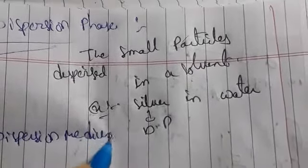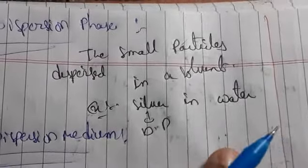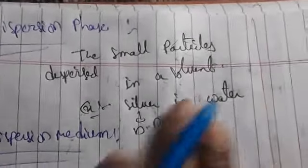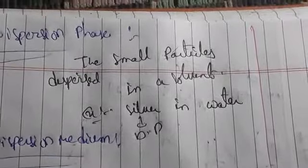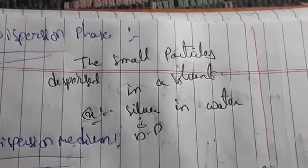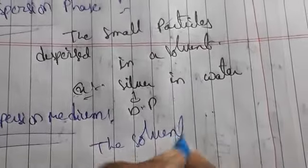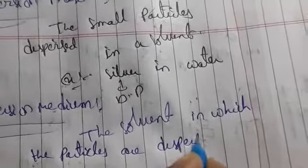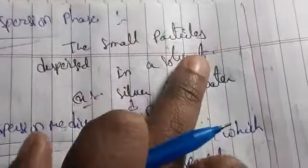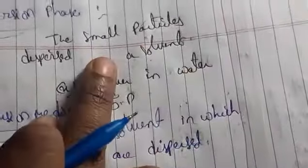Dispersion medium is the solvent in which the particles are dispersed, present in large excess. Small particles are dispersed in the solvent — that is the dispersion phase. The solvent here takes large particles and is present in large excess — that is the dispersion medium. So: dispersion phase = small solute particles dispersed in the solvent; dispersion medium = the solvent present in large excess.